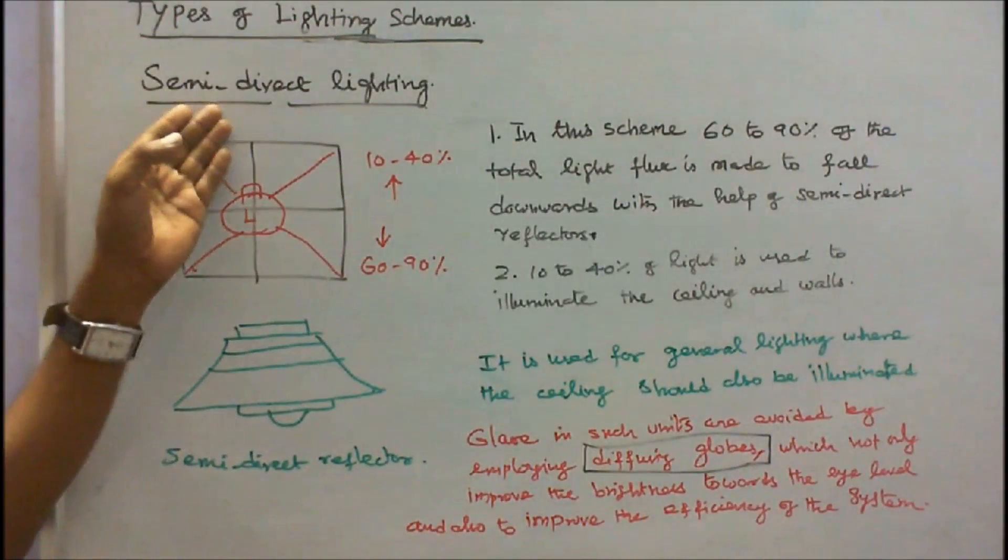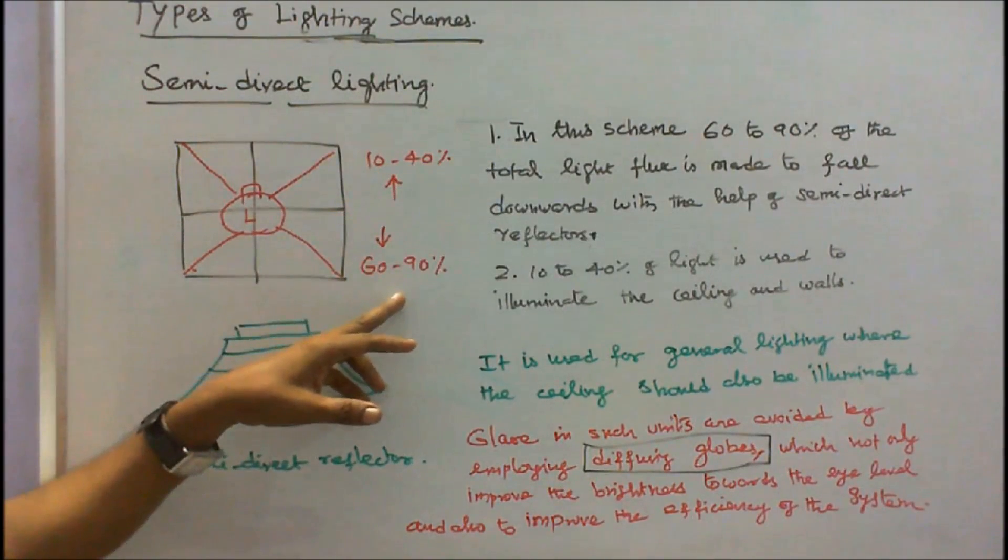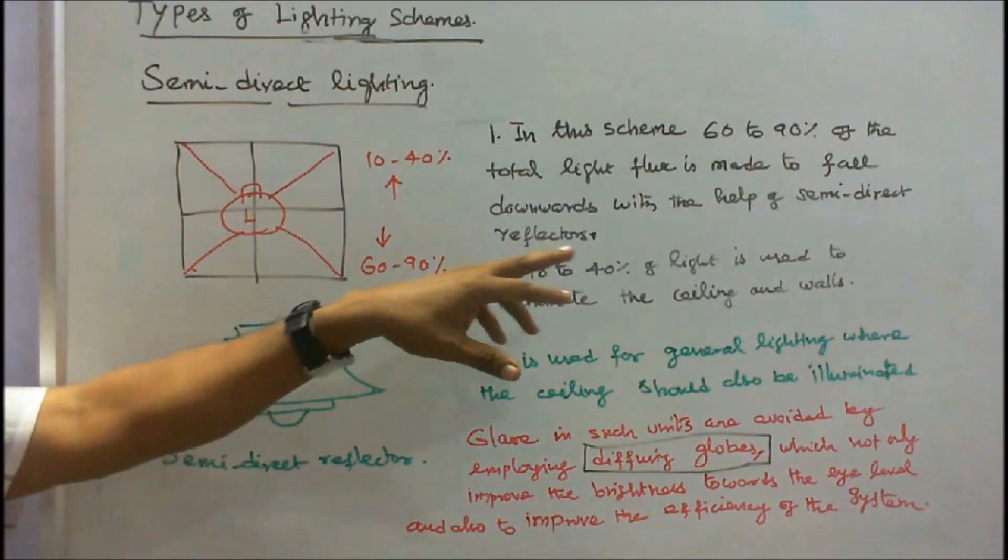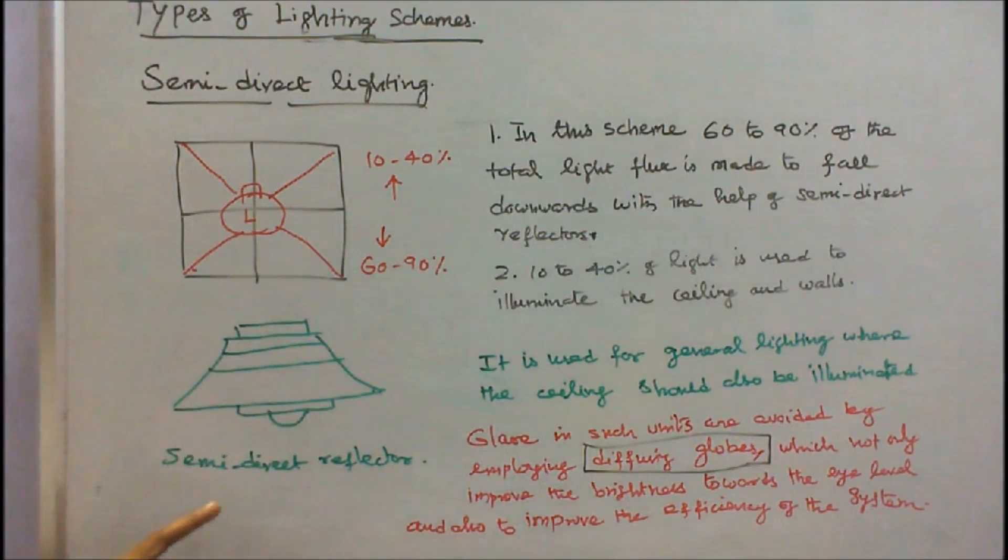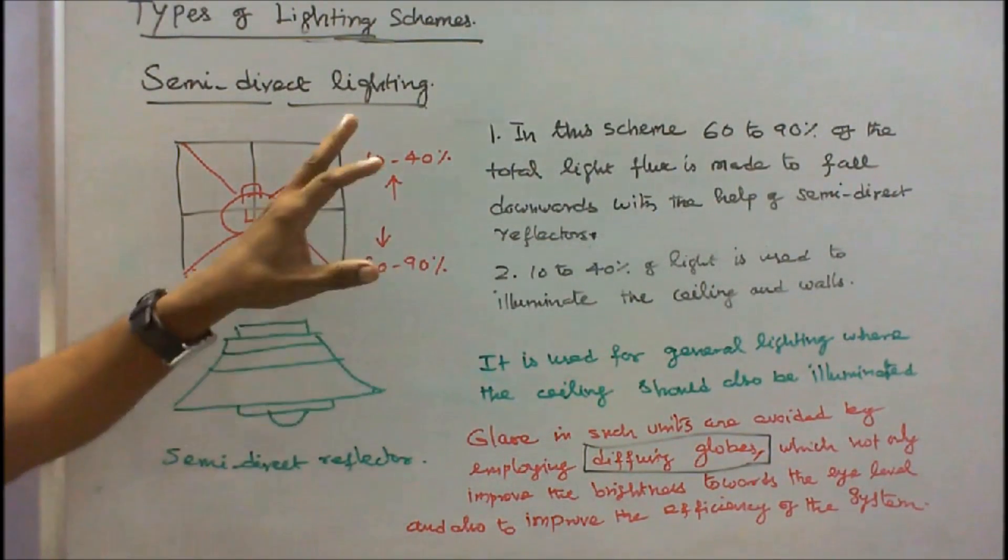Next is semi-direct lighting. In this scheme, 60 to 90% of the total flux is made to fall downward with the help of semi-direct reflectors. This is a semi-direct reflector. 10 to 40% of light is used to illuminate the ceiling and walls.